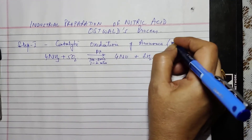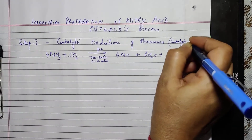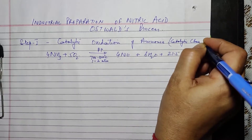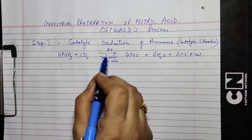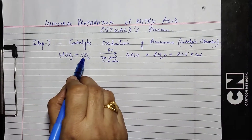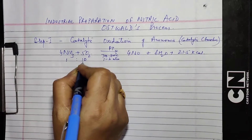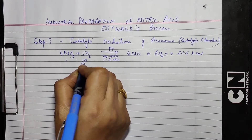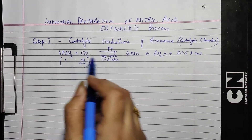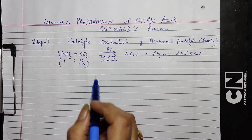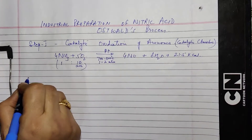This first step takes place in a chamber known as the catalytic chamber. In this chamber, the temperature is maintained and the mixture of ammonia and oxygen is allowed in the ratio of 1 to 10. We don't just take oxygen — we take air, because the entire air is not oxygen, so a large quantity of air is taken.